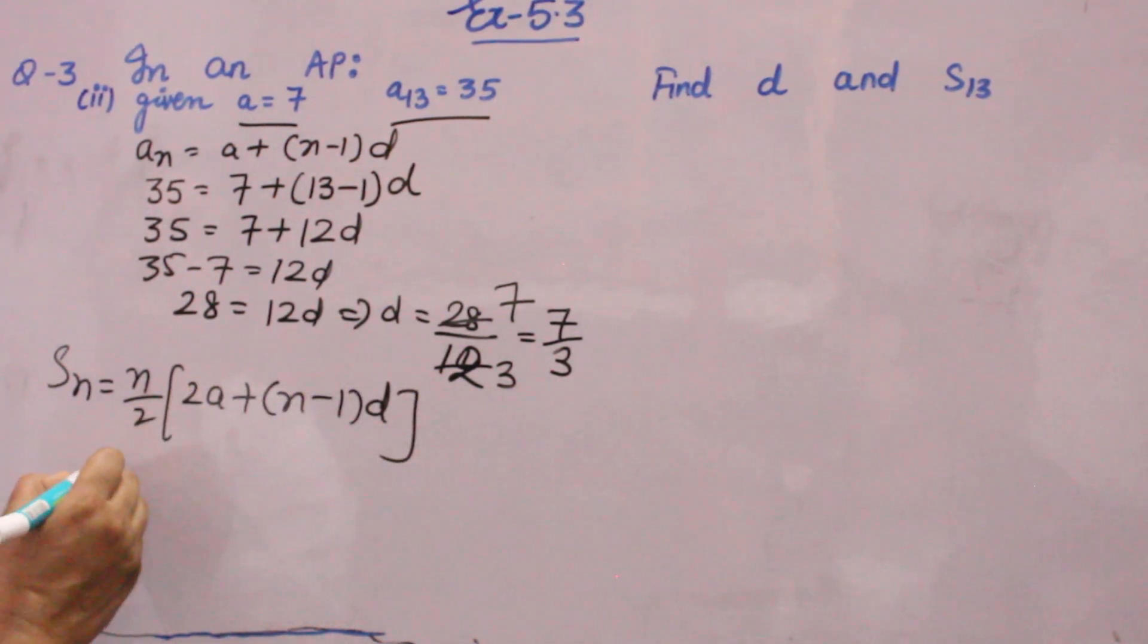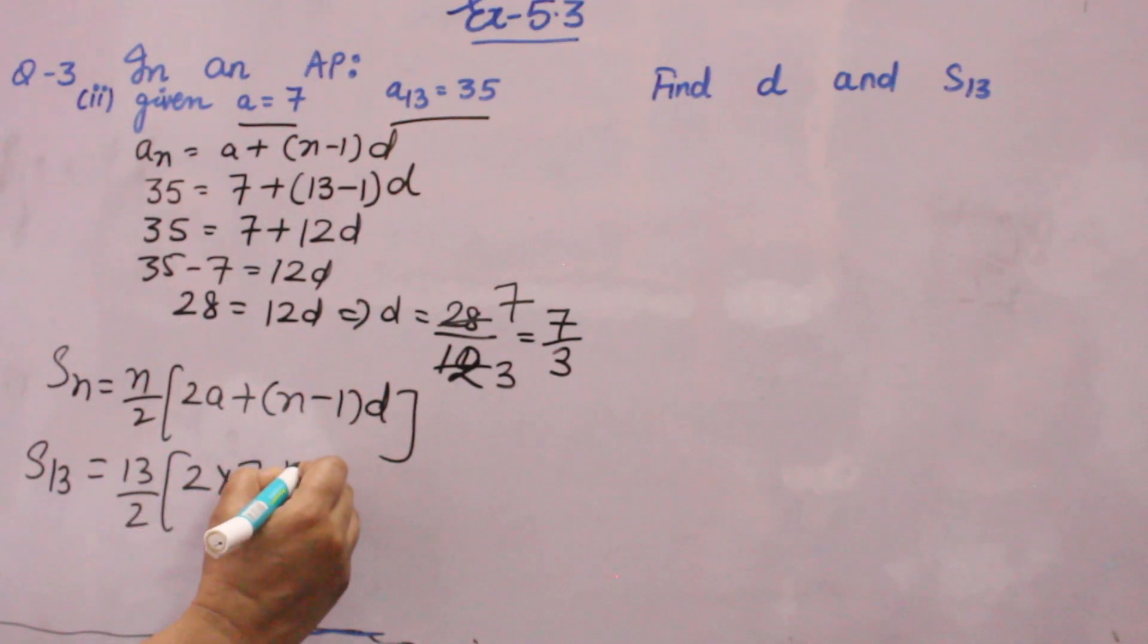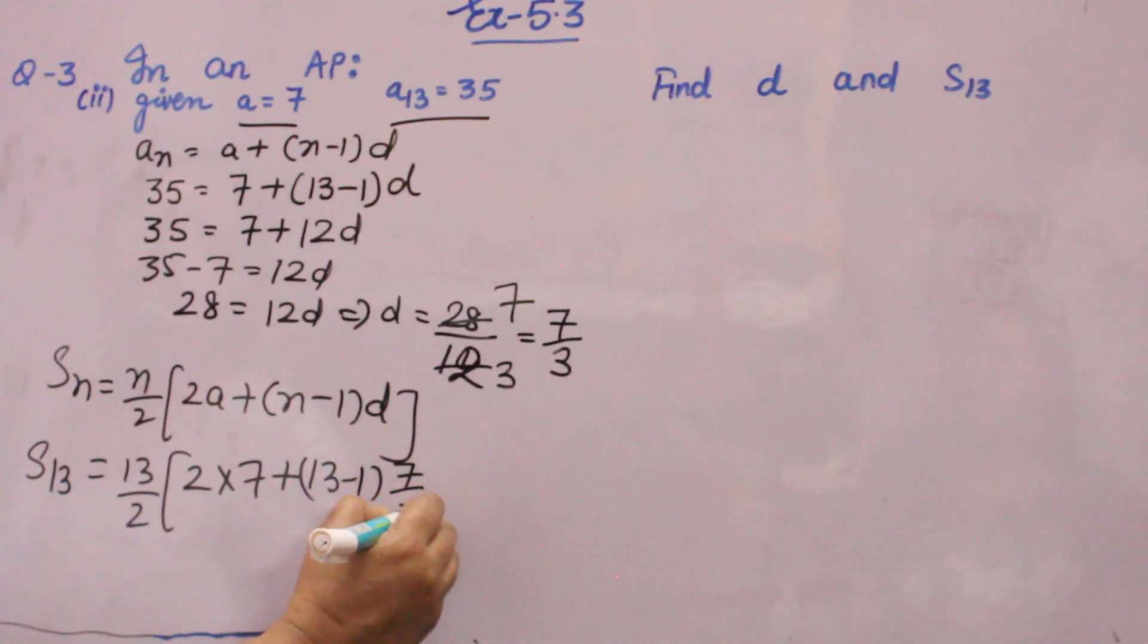N value, you know, is 13. So here you will put 13 over 2, 2 into A value is 7 plus N is 13, so 13 minus 1 and D you have calculated this, 7 by 3.